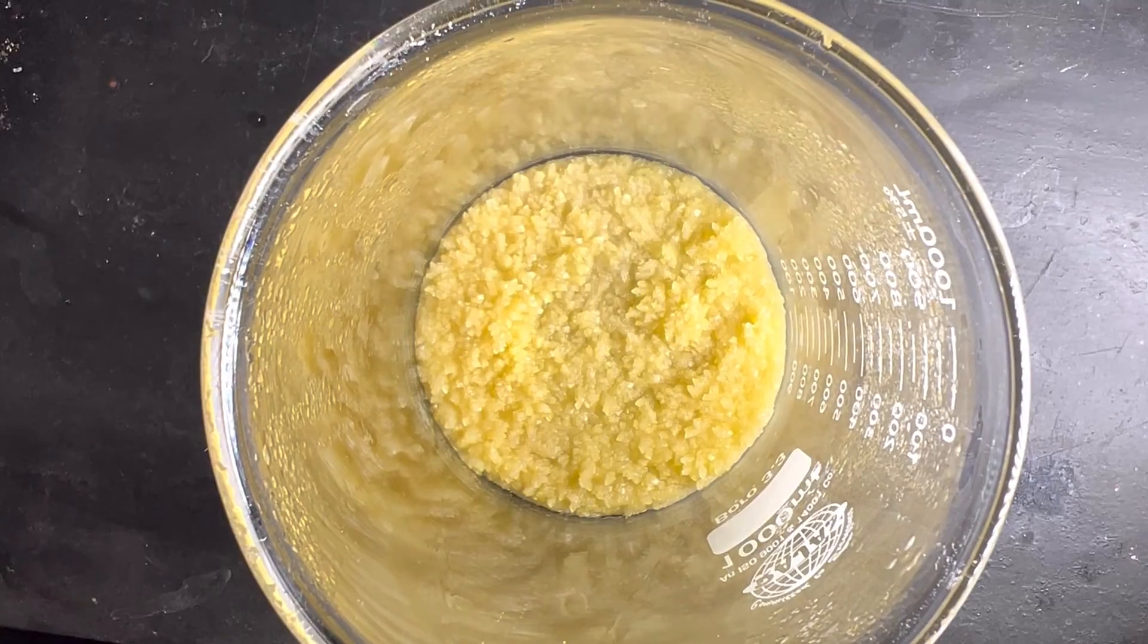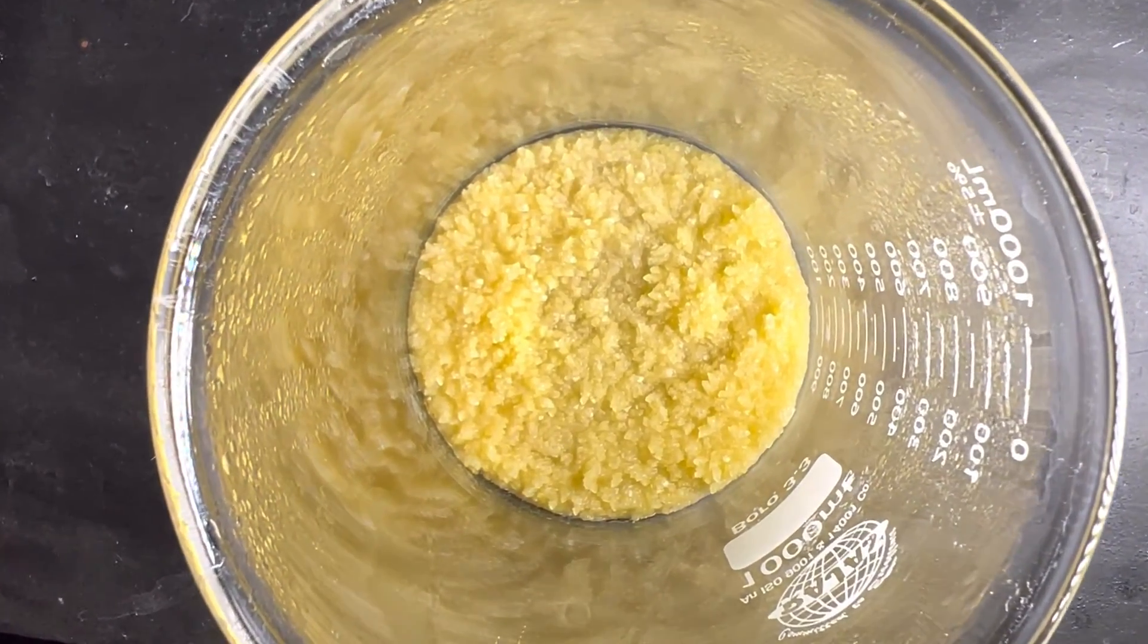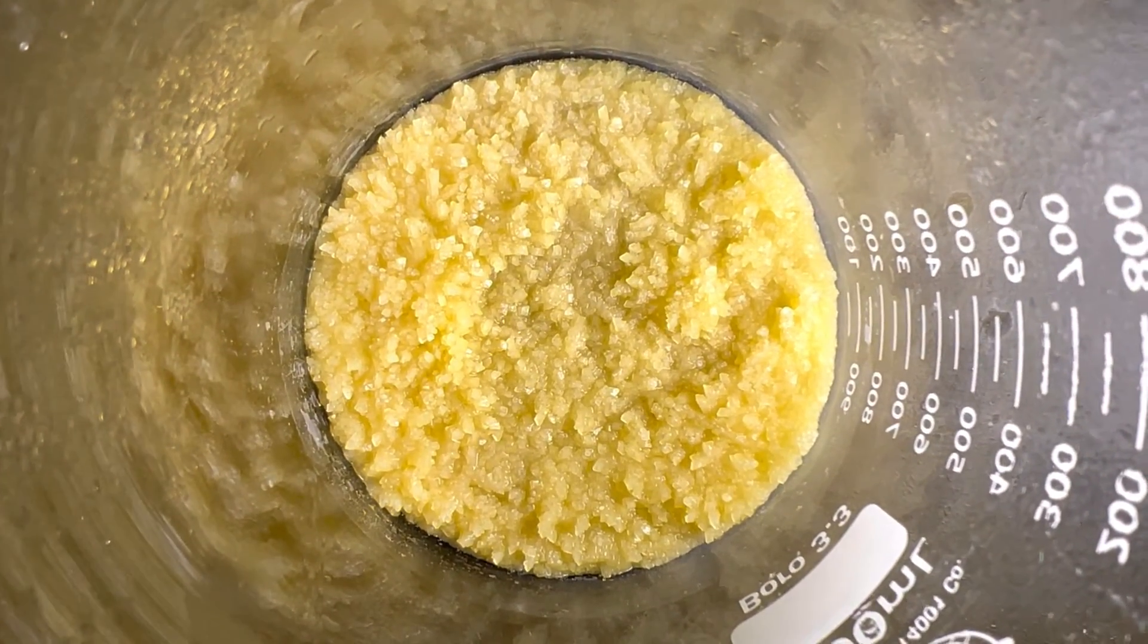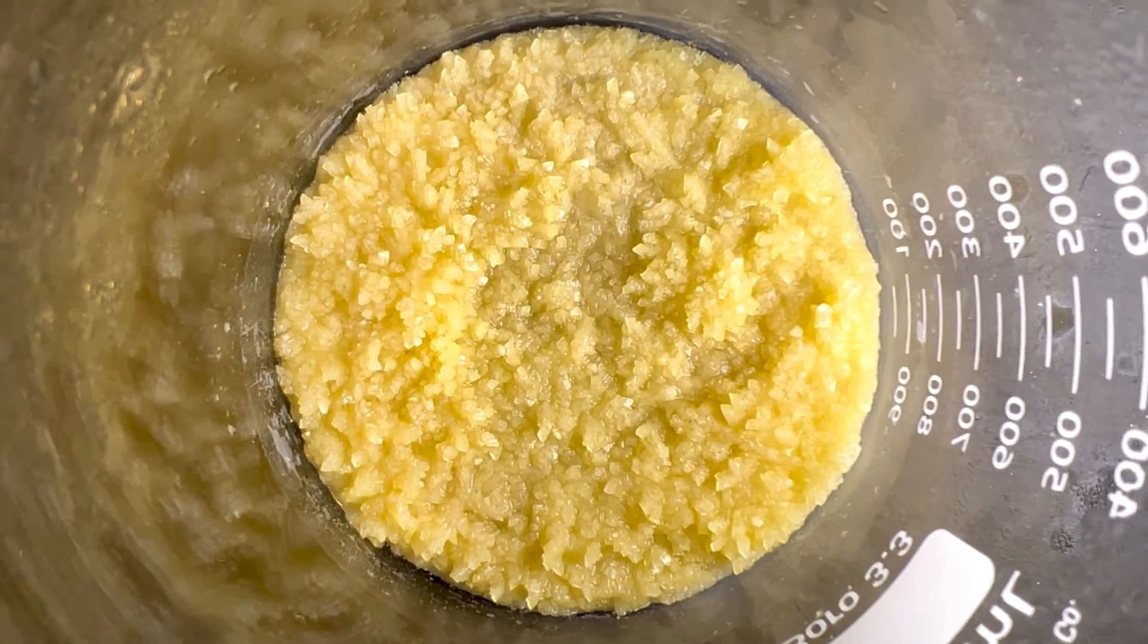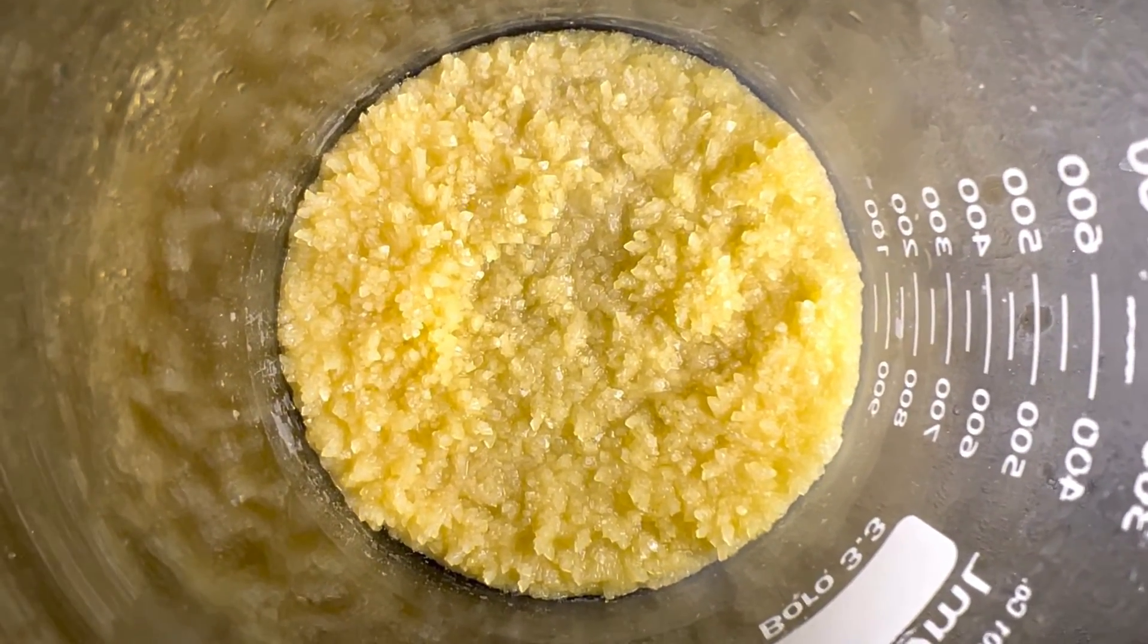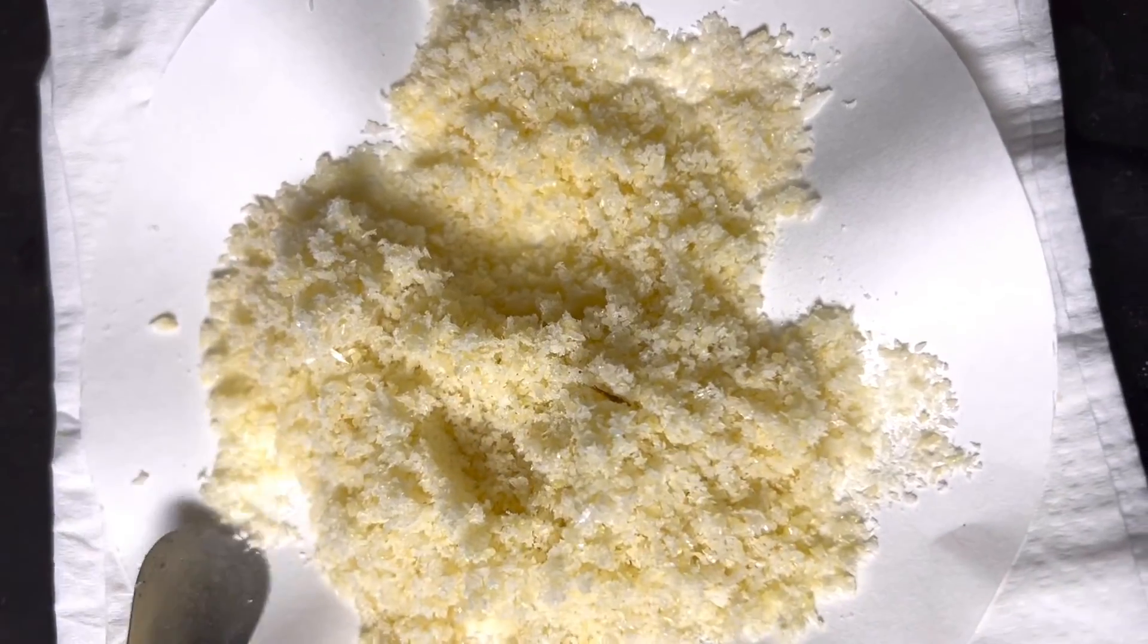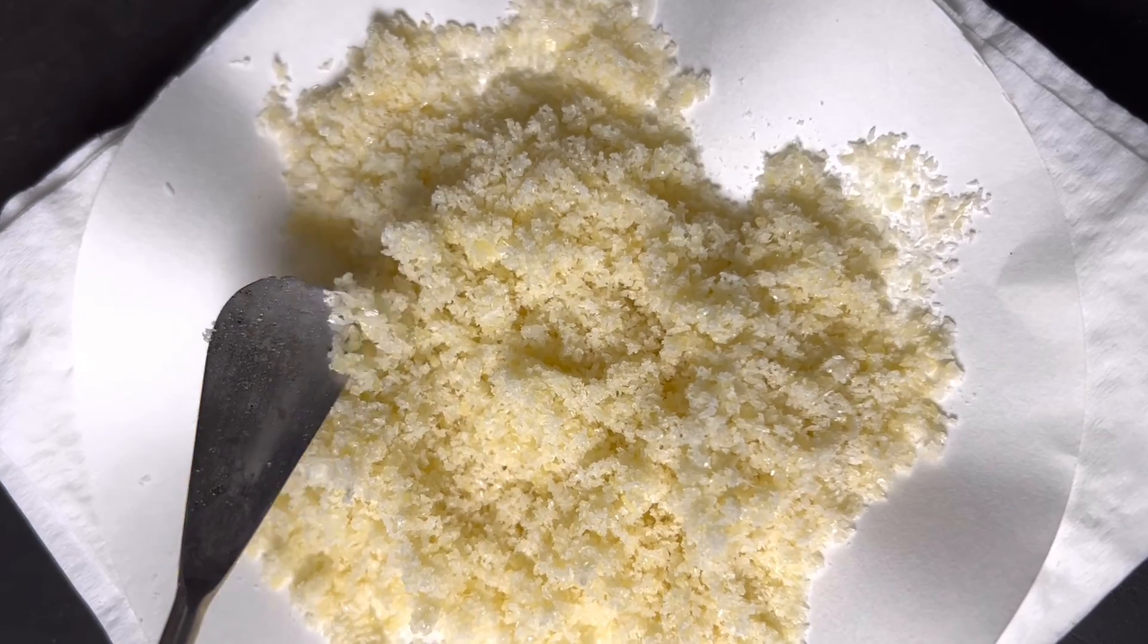Now we move on to recrystallization. It was recrystallized using hot boiling ethanol-water mixture in a 70:30 ratio. Activated charcoal was added to decolorize the compound as it had a yellow color. The mixture was filtered while hot, and on cooling, crystals of barbituric acid separated out. After cooling to room temperature, the beaker was placed in a refrigerator overnight. The next day we saw lots of crystals inside. The color of the product improved significantly and was much whiter. The product was then dried.